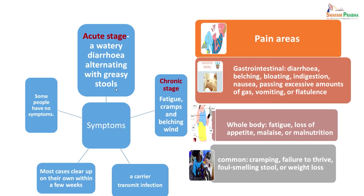Some people have no symptoms and remain asymptomatic, while others have acute or chronic stages. In the acute stage, there can be watery diarrhoea alternating with greasy stools. In the chronic stage, patients can have fatigue, cramps, and belching, or become a carrier and transmit the infection. Many cases clear up on their own within a few weeks without treatment. Symptoms can include abdominal pain, diarrhoea, belching, bloating, indigestion, nausea, excessive gas, vomiting, flatulence, whole-body fatigue, loss of appetite, malaise, malnutrition, cramping, failure to thrive, foul-smelling stool, or weight loss.